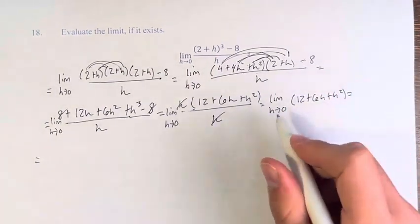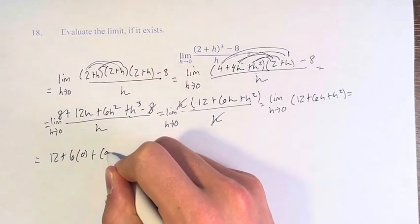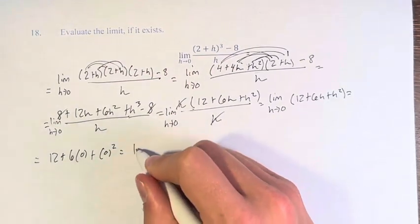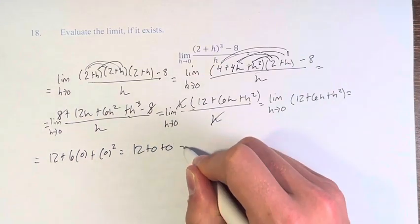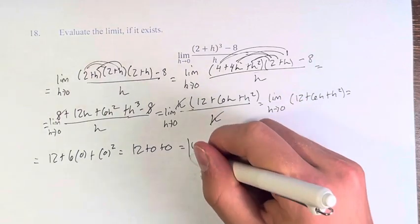And now we can plug in 0 for h to get 12 plus 6 times 0 plus 0². This is 12 plus 0 plus 0, which is 12. Now the value of this limit is 12.